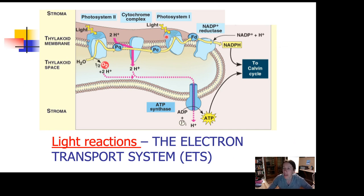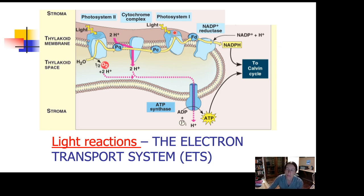The next thing to look at is this big blue lumpy thing here. This is one of the photosystems that we talked about in the previous video, which are the groups of chlorophyll molecules. This diagram shows them as little green circles embedded in a big blue lump. The big blue lump is supposed to be proteins that's kind of holding it all together. So this is a photosystem — a bunch of chlorophyll molecules — and that's why you can see the light coming in here, striking the chlorophyll.